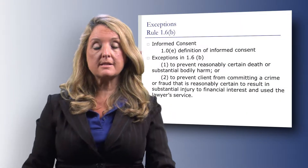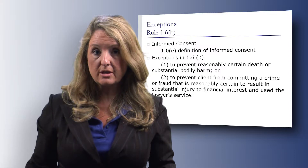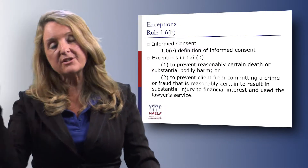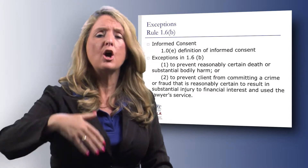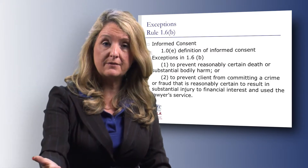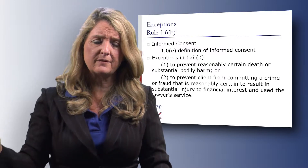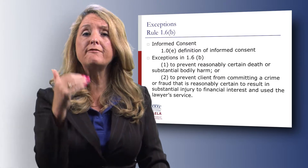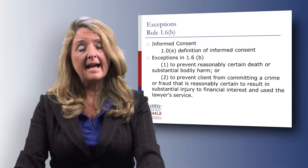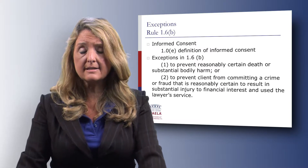That brings us to the Rule 1.6 exceptions, starting with informed consent. If we think our client wants information divulged to different people, we need that client's informed consent — not just a casual 'okay, I'll tell your daughter about it,' but explaining to the client the benefits of sharing information, the risks, and the alternatives. The client needs to understand, even if they would never believe their son or daughter would do anything to hurt them, the attorney has a responsibility to get informed consent before divulging that information to anybody other than the client. We fall short many times in having that thorough discussion.